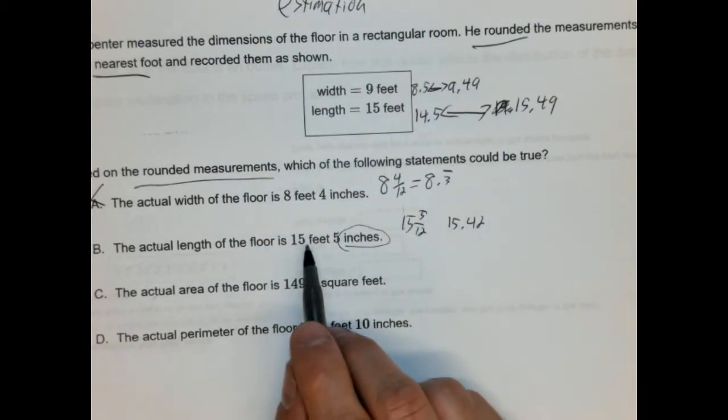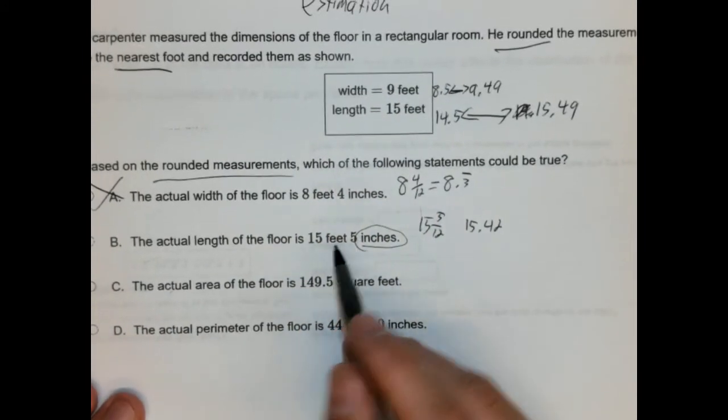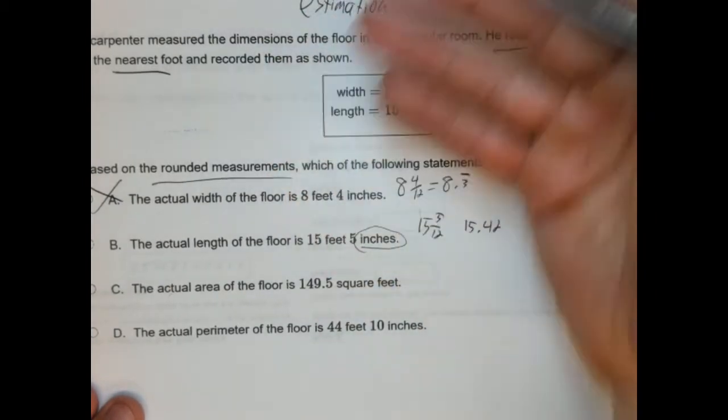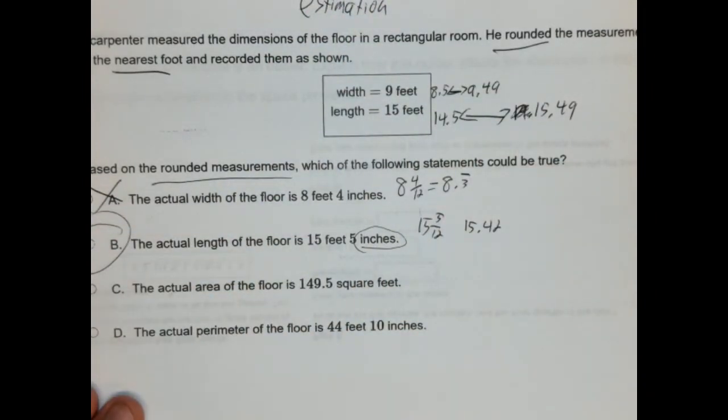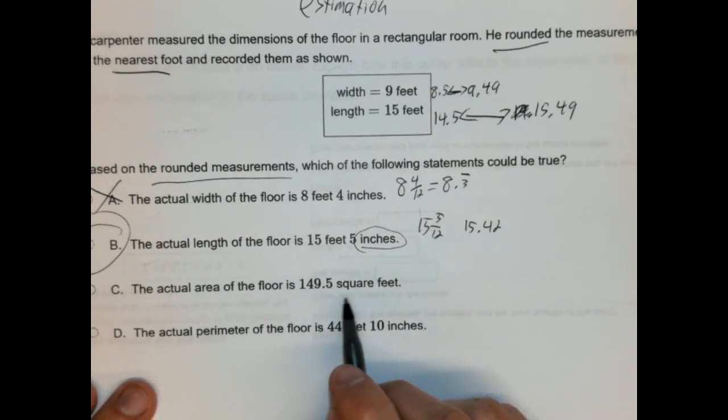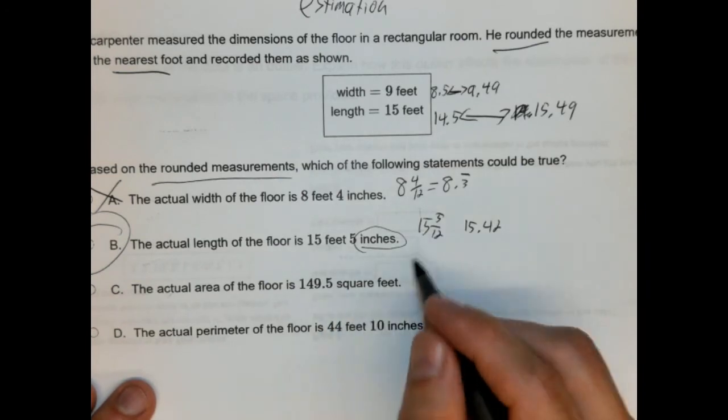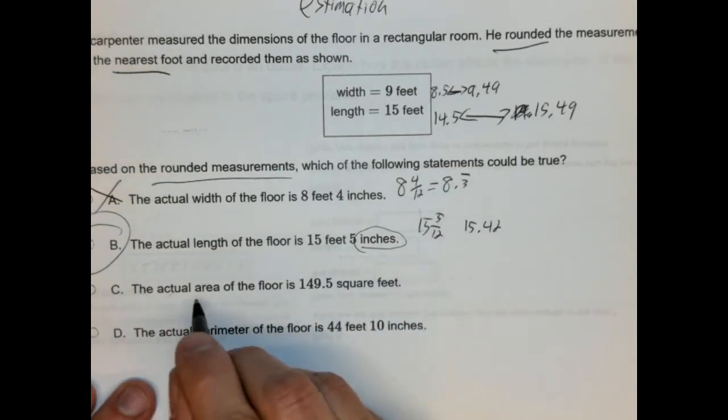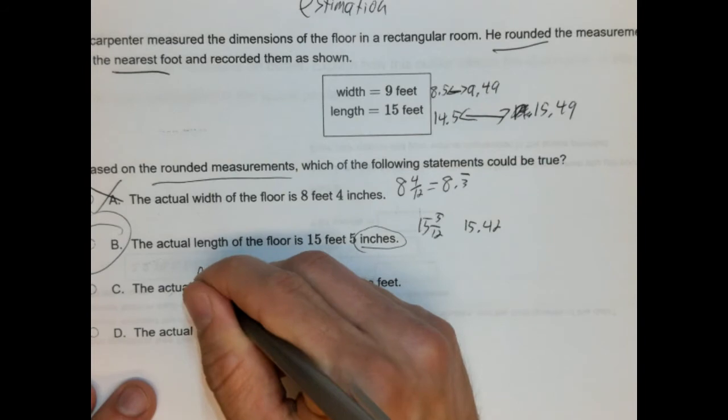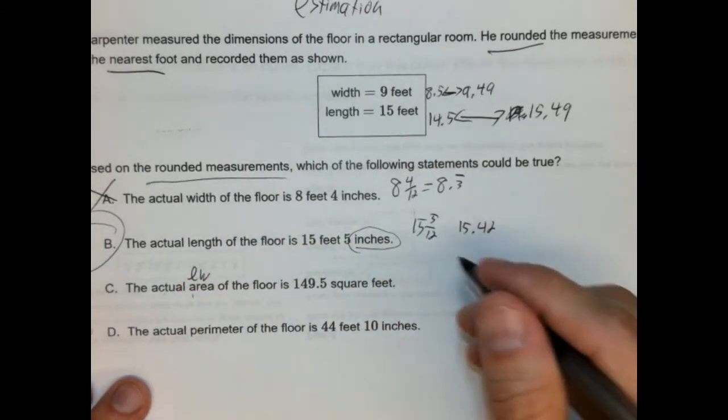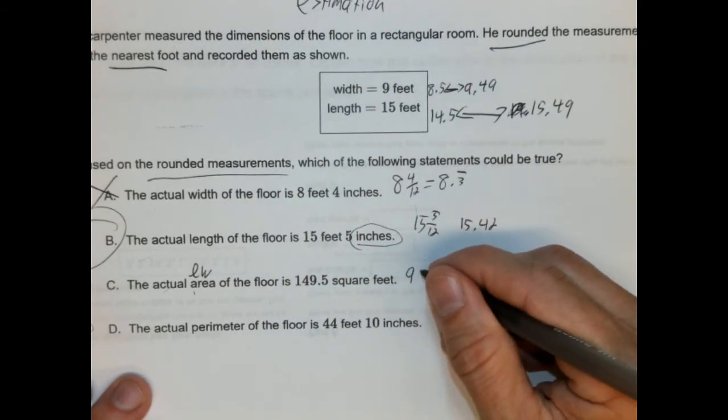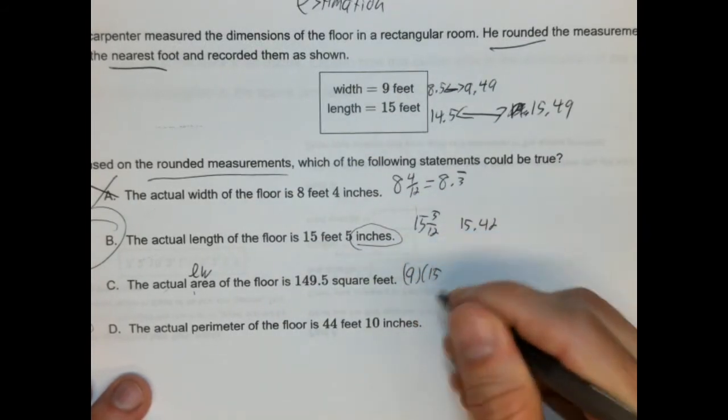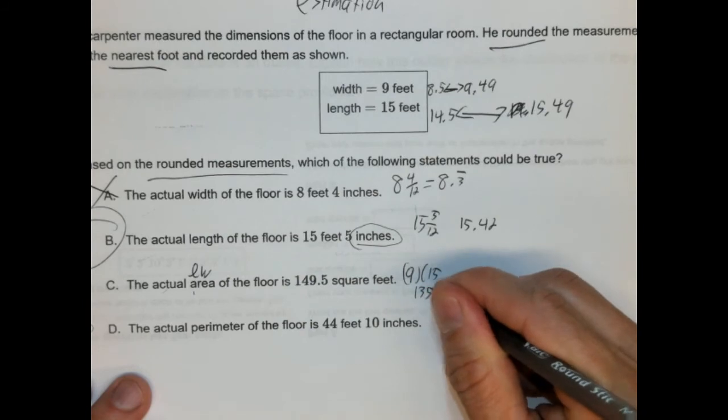But most people look at this and they think, oh, they see the 15, they see the five. They think of 15.5 or 15.5 tenths, which it's not. So, this is actually going to be the answer. Let's see why these other two don't work, though. The actual area of the floor is 149 and five tenths square feet or 0.5 square feet. So, we find the area by multiplying the length and width of a rectangle. Let's see what, if we don't change this, let's see what it is. So, 9 times 15 is 135.